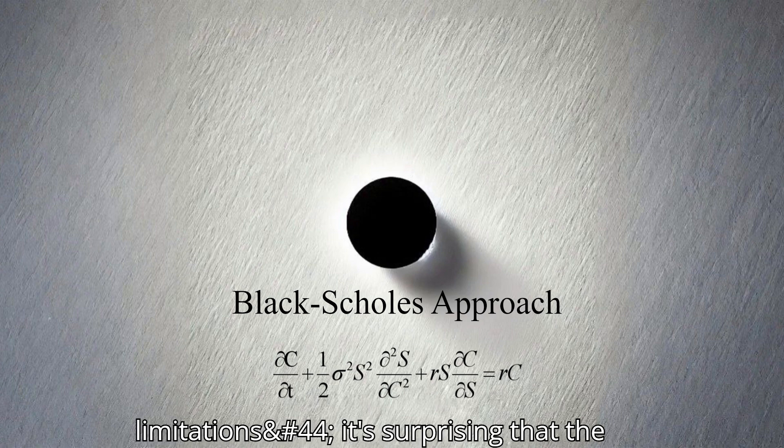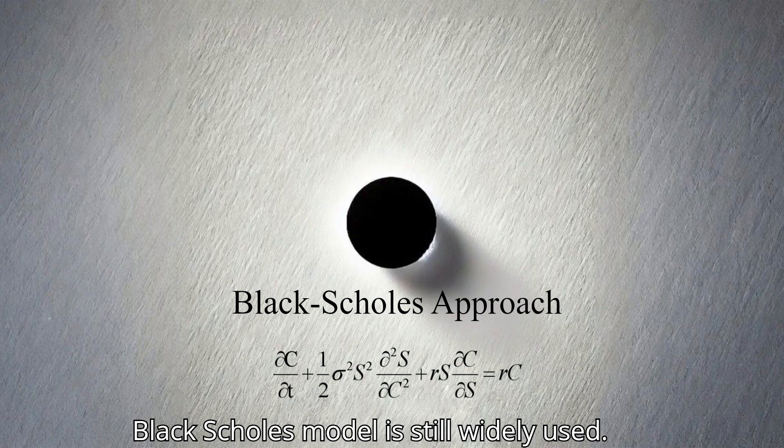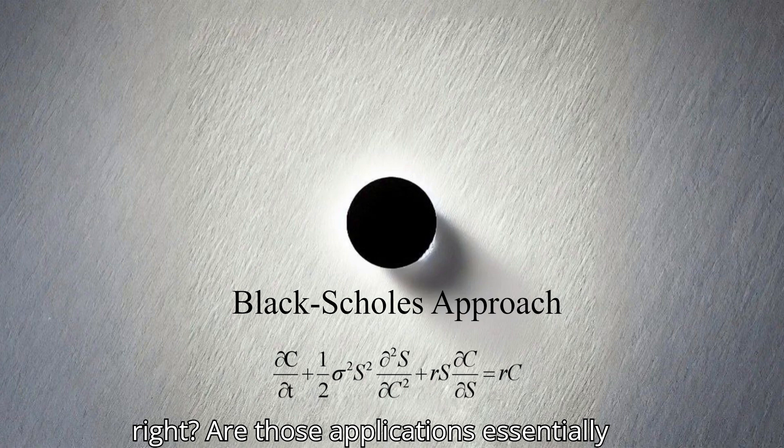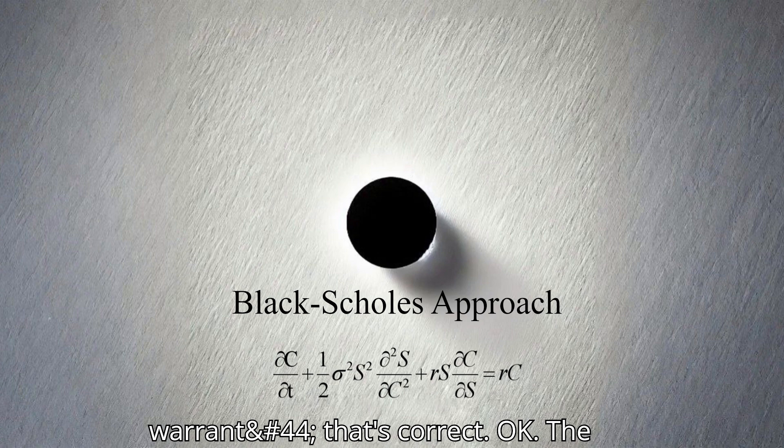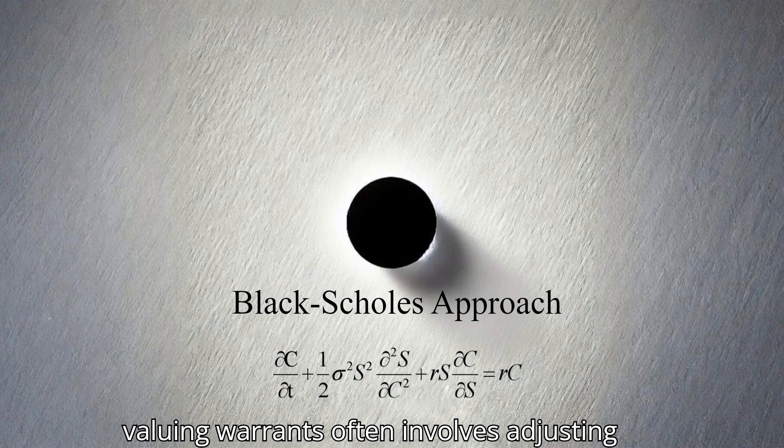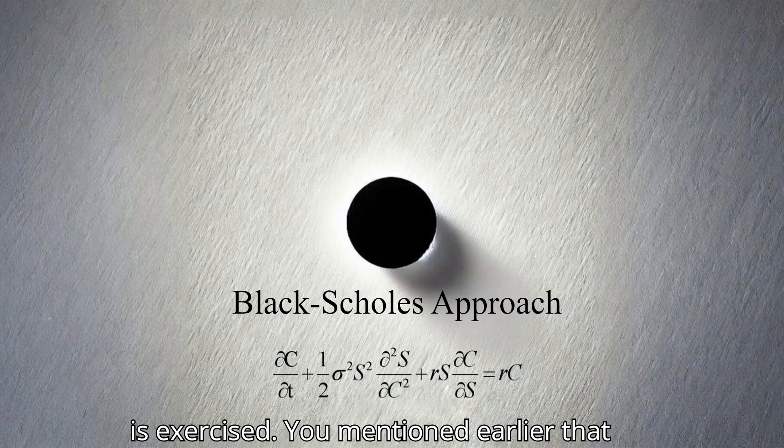These idealized assumptions are necessary to create a mathematically tractable model, but they also highlight the potential divergence between theoretical predictions and actual market behavior. Given these limitations, it's surprising that the Black-Scholes model is still widely used. One of the papers you shared discussed its applications in pricing warrants, which are similar to options but often attached to bonds or preferred stock. The fundamental principles of the Black-Scholes model can be applied to various financial instruments with option-like features. For instance, valuing warrants often involves adjusting for factors like the dilution effect of new shares being issued when the warrant is exercised.